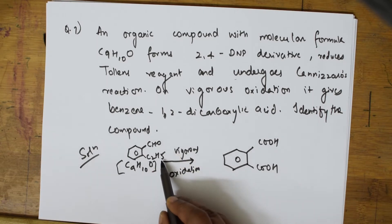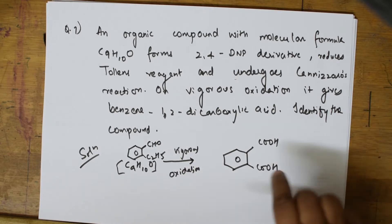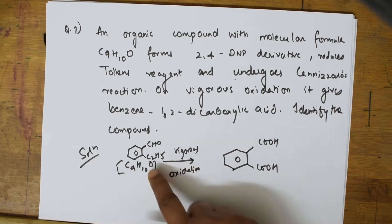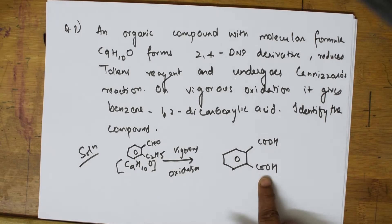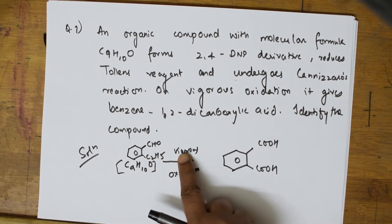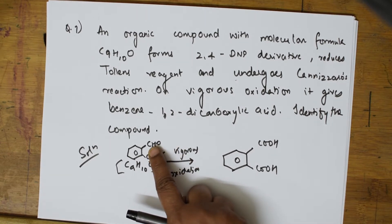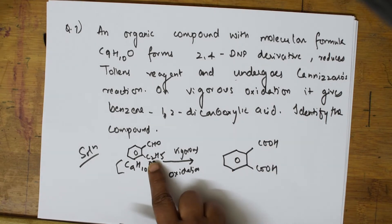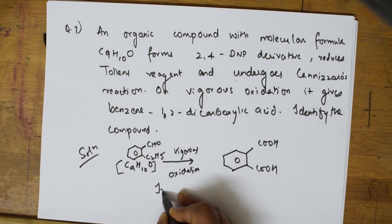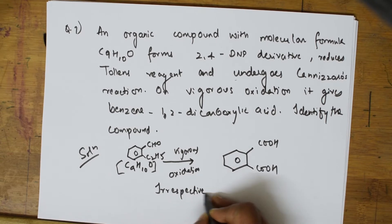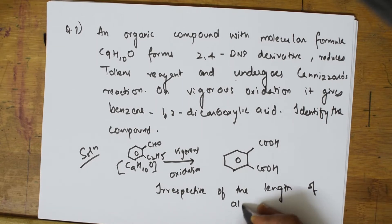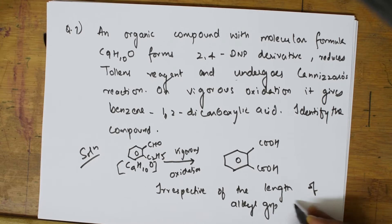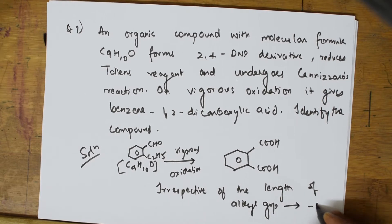Remember: whatever alkyl group is present on the benzene ring, it always gets oxidized to COOH — regardless of the length of the alkyl group. Whether it is C3, C4, or any length, it compulsorily gets oxidized to COOH, because oxidation of aldehydes gives acids. This is how you solve this type of question.